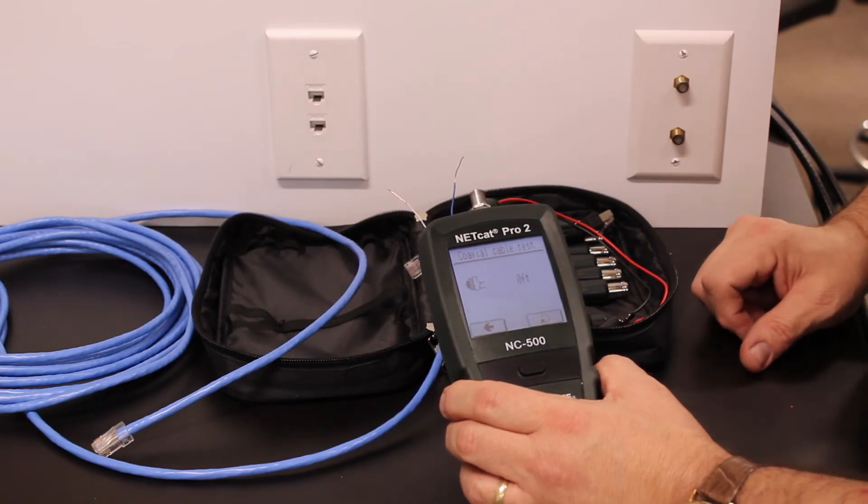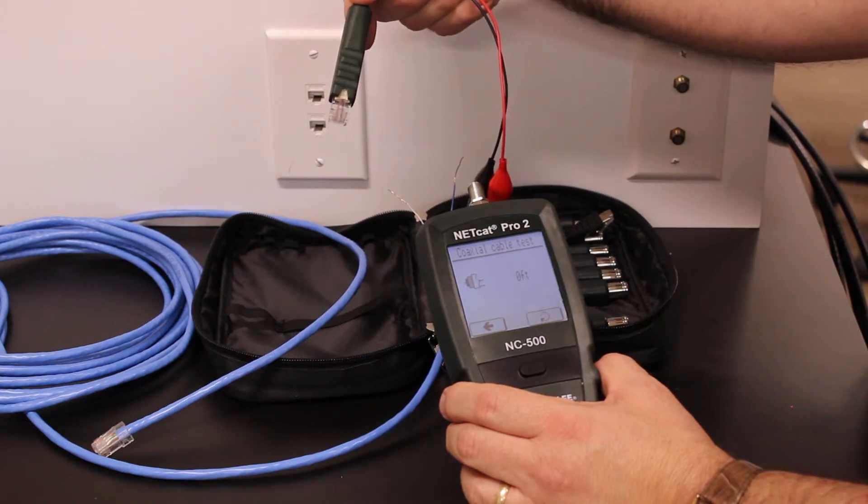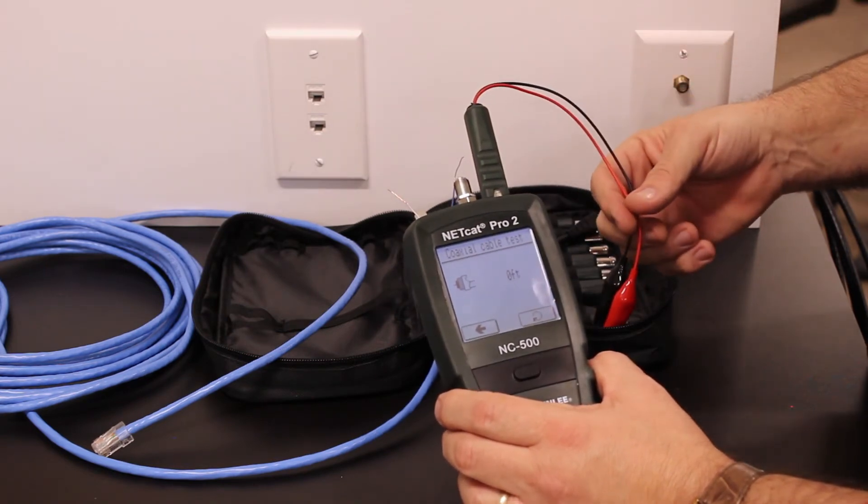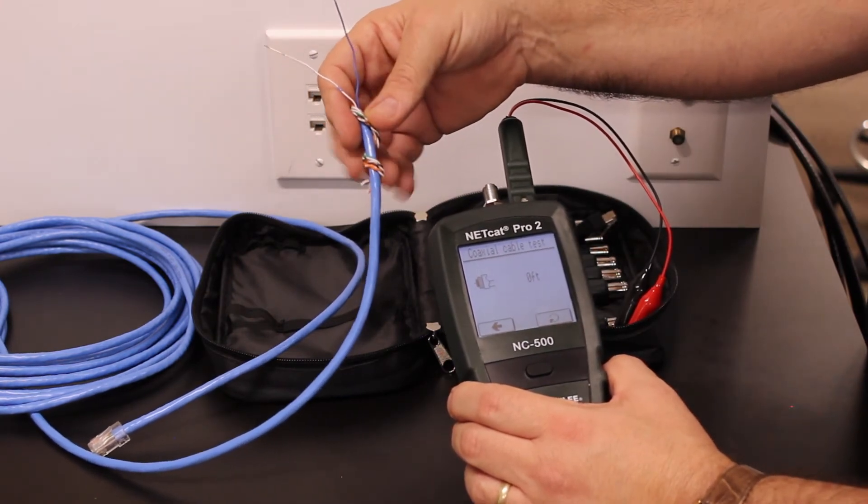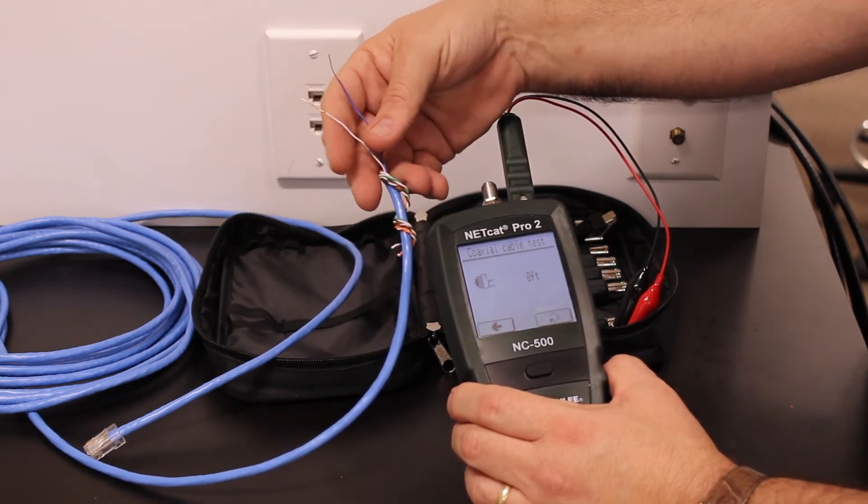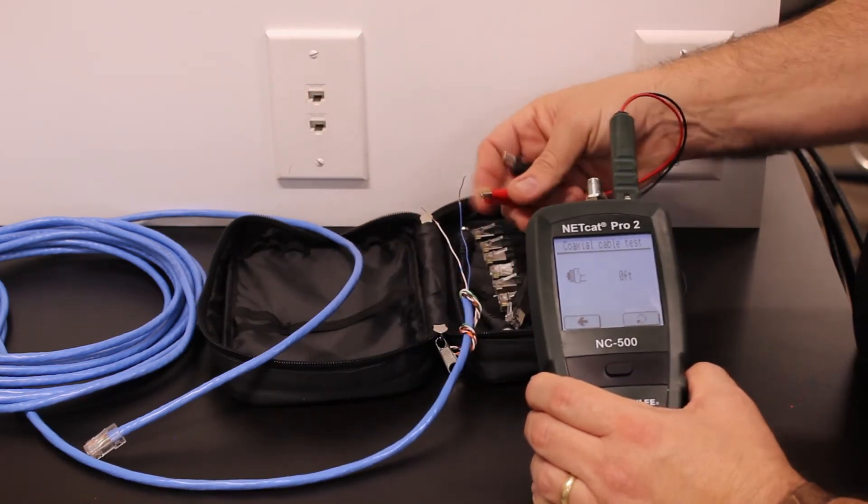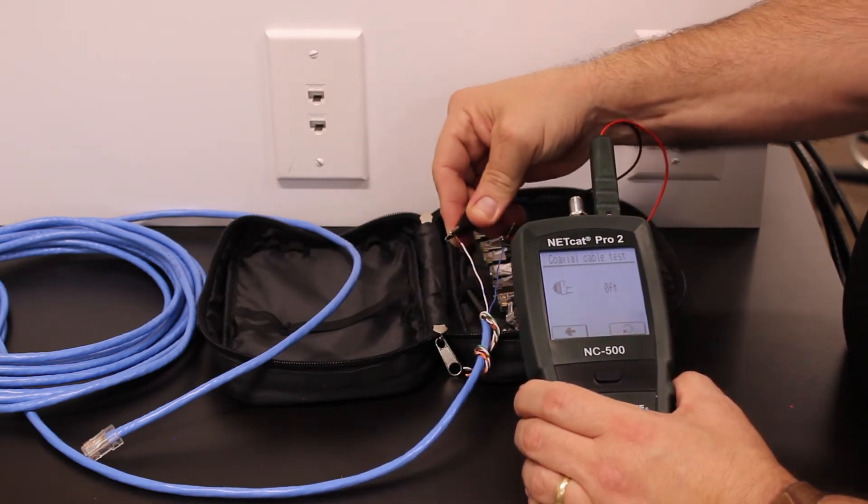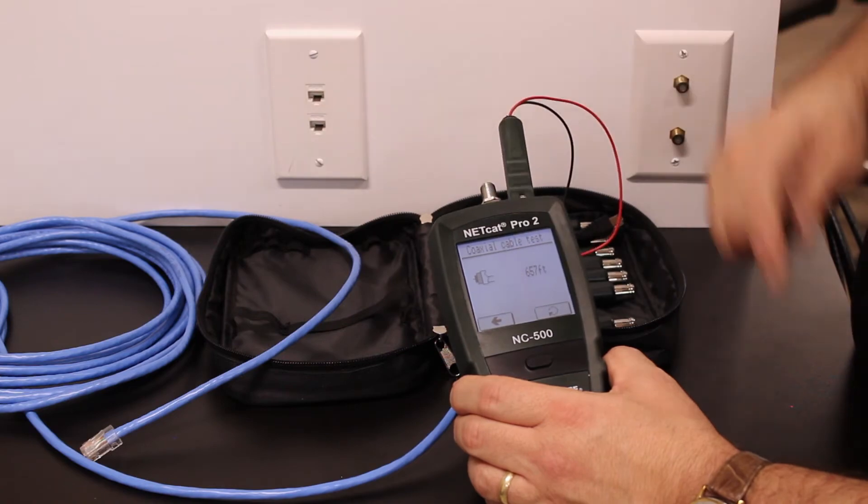To measure the length of an unterminated network cable, similar to the unterminated coax cable, we need to use the red and black alligator clip test lead. Insert it into the RJ45 port in the top of the unit. You will need to strip back the jacket on your unterminated cable. Select one of the wire pairs. I have selected the blue and the blue-white pair from this cable. Strip the insulation off of the two conductors of the wire pair. Connect the red and the black leads to the wire pair. Touch the recycle button. The length of this cable is 657 feet.